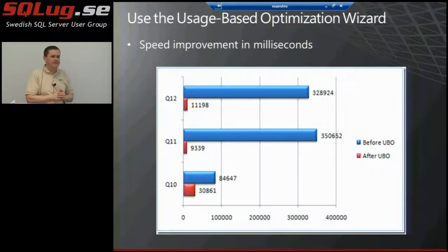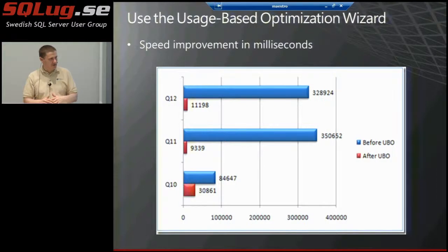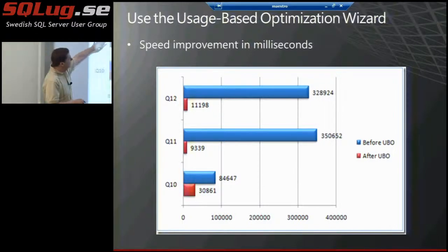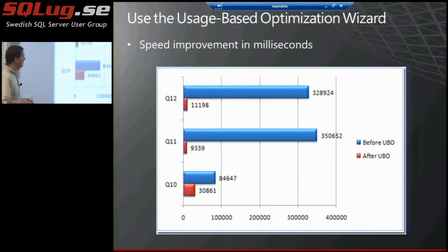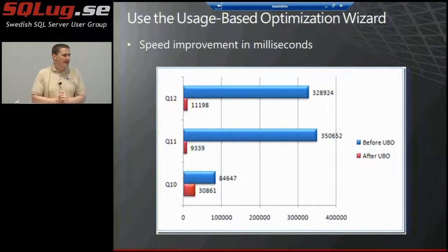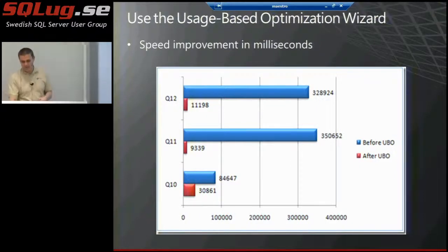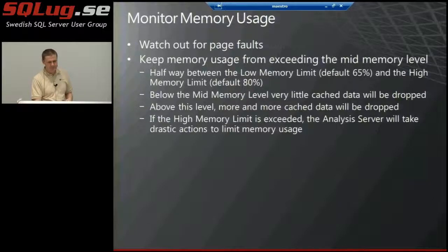Another topic: use the usage-based optimization wizard. This did not work well in SQL Server 2005, but now it does work in 2008. The SQL CAT team has a white paper about it. Usage-based optimization can be a very effective tool — not everybody who should be using it is using it. Microsoft encourages you to try it regularly, because usage patterns vary over time, the cube structure changes, or the data has different characteristics. Using it repeatedly can keep performance up.